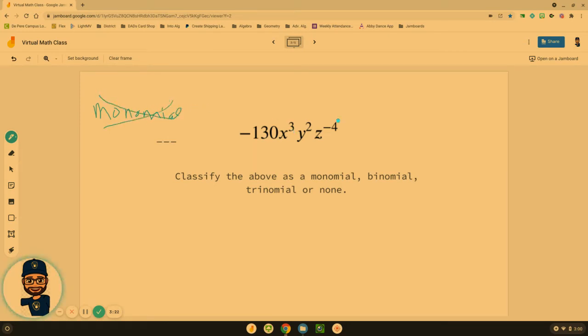Because we have this element right here, z⁻⁴, we cannot have negative exponents. Mathematically speaking, what that does is it moves that element of the term x³y² - it moves that element to the denominator and becomes positive.